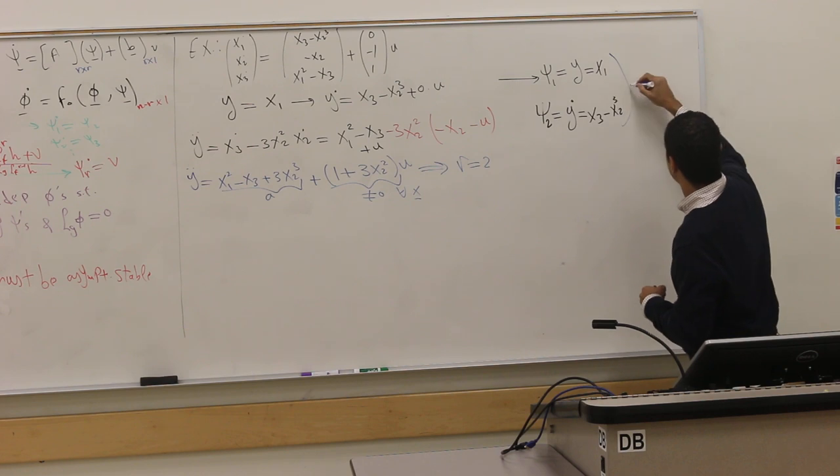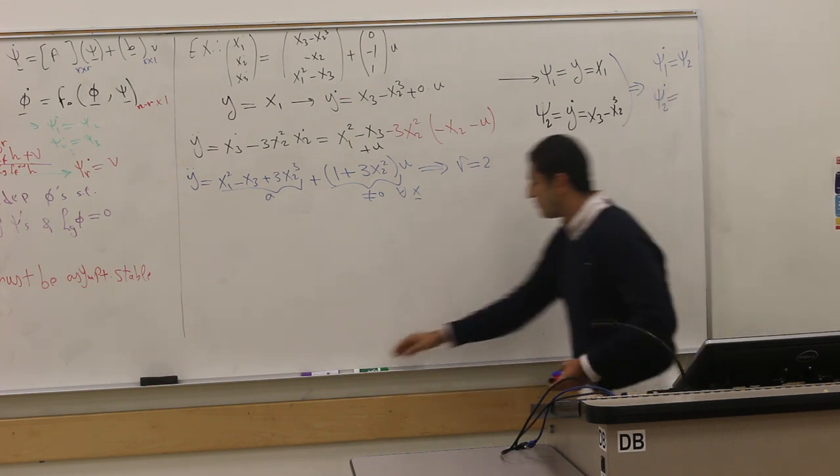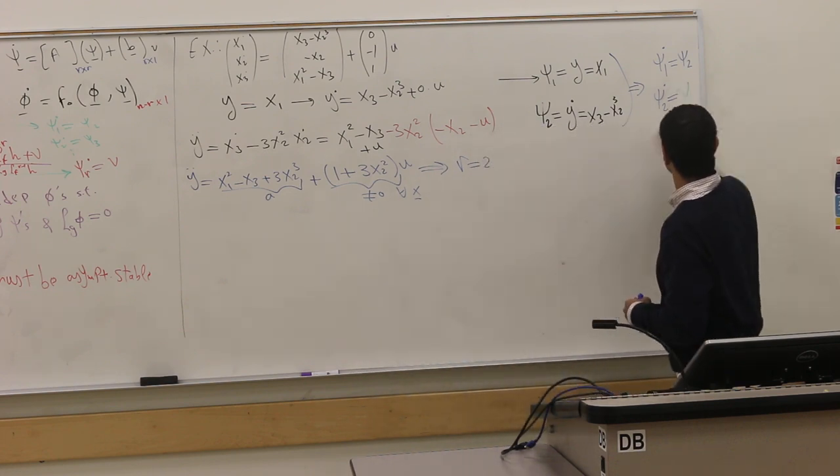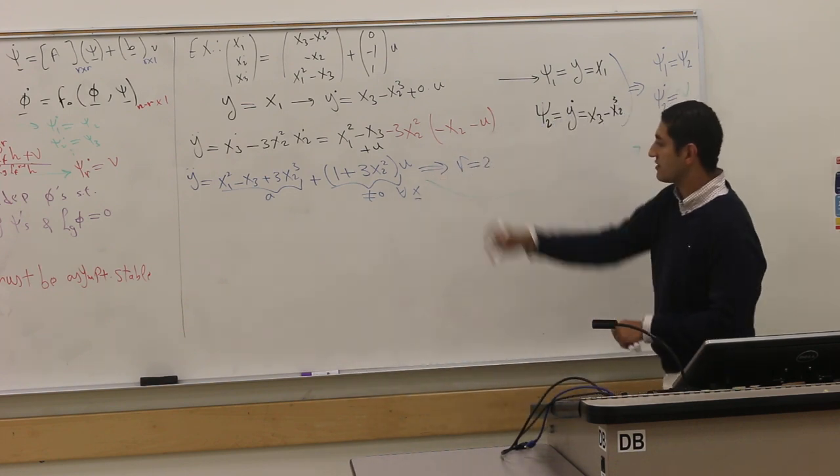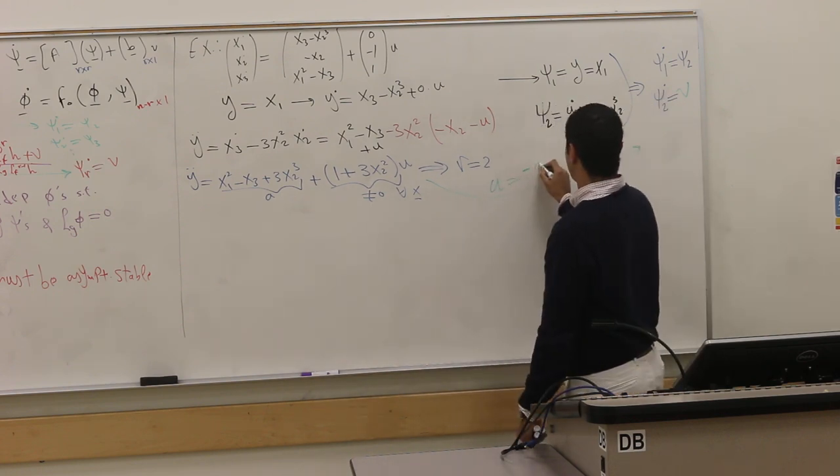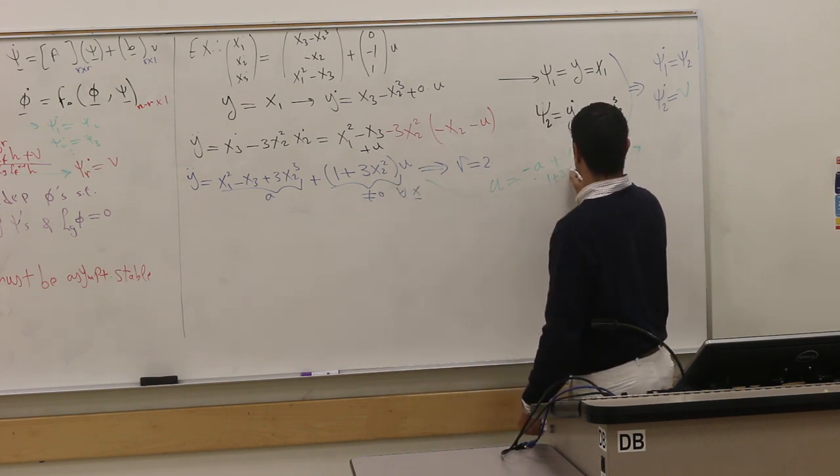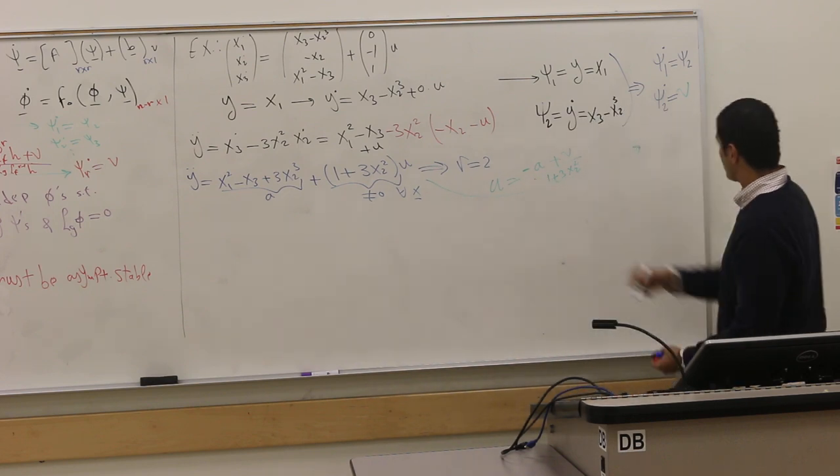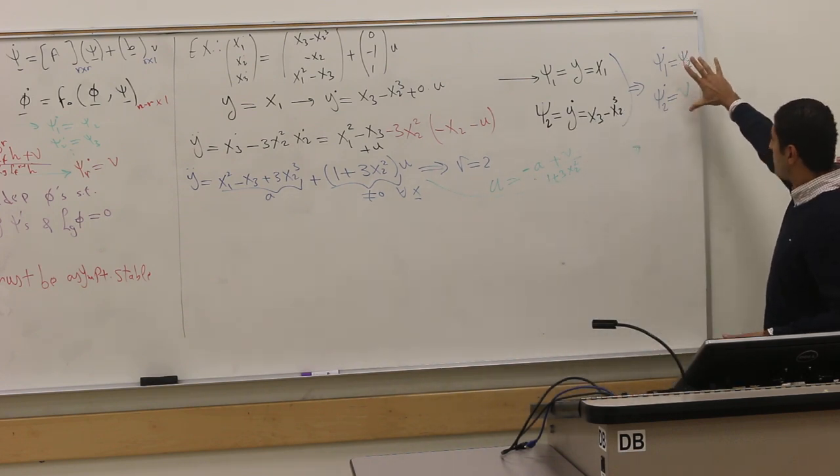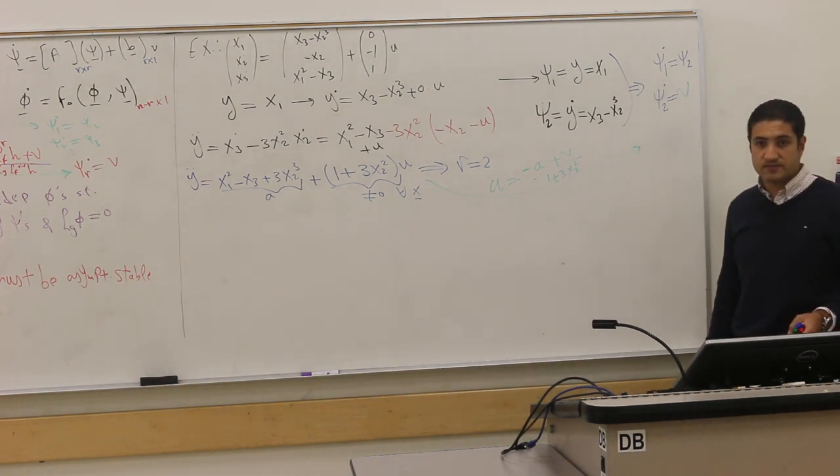Now I can define my ψ's. My ψ₁ is the output y, which is x₁. ψ₂ is x₃ minus x₂³. This is the coordinate transformation. These guys: ψ₁ dot is ψ₂ by definition and ψ₂ dot is v.